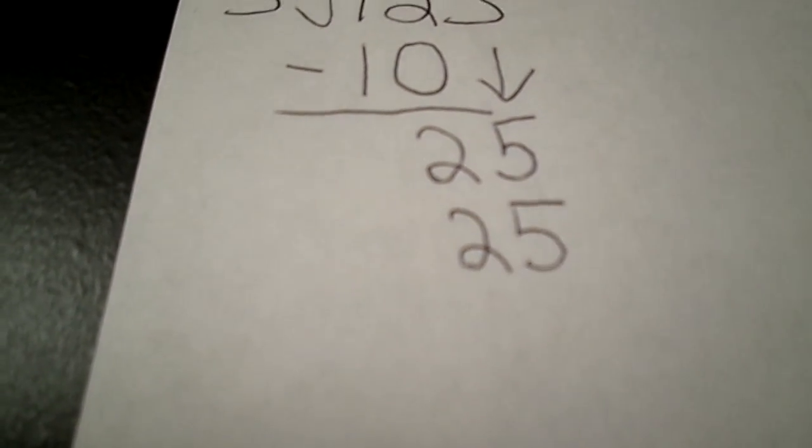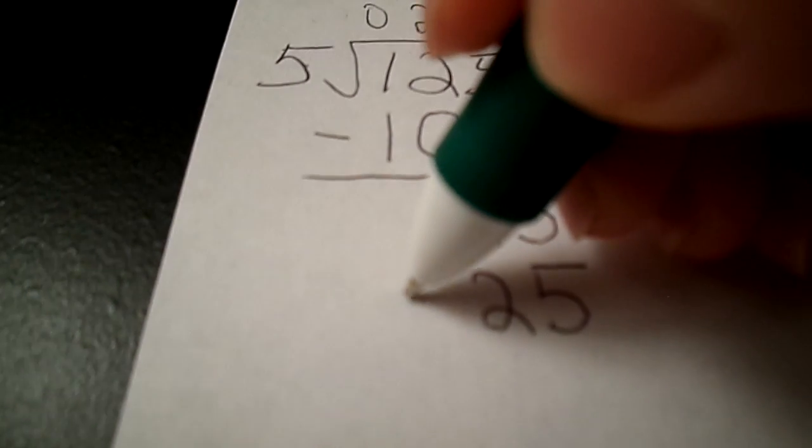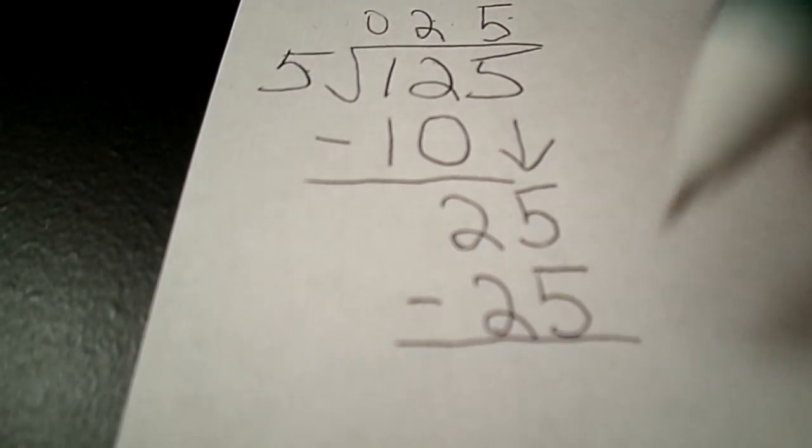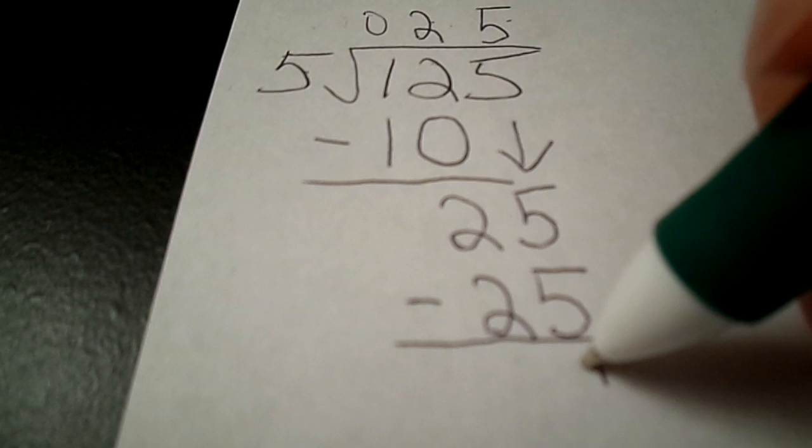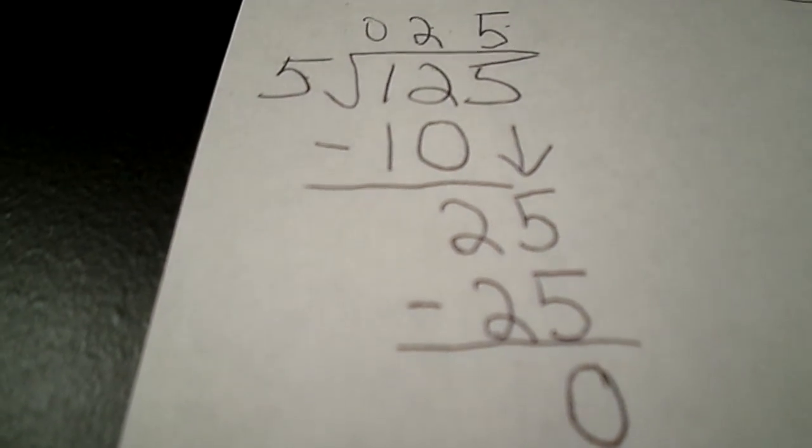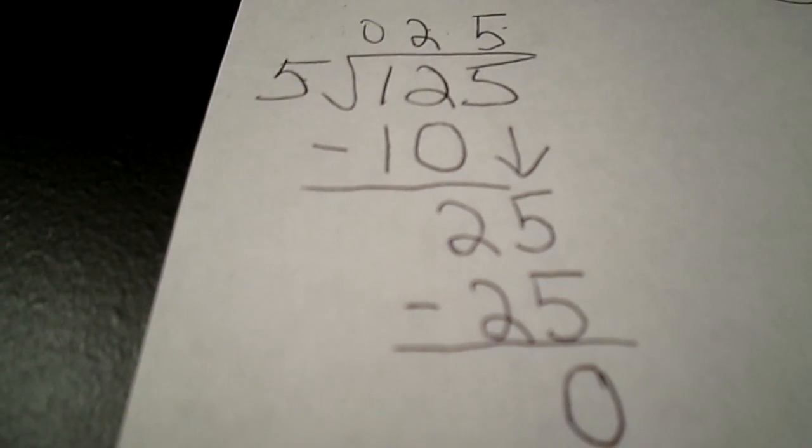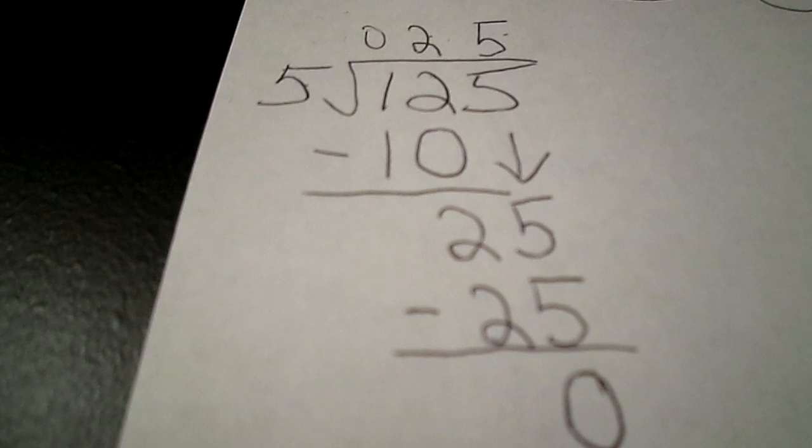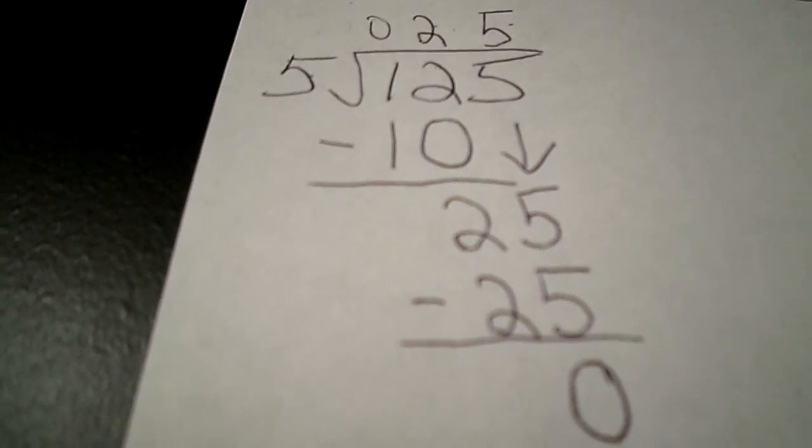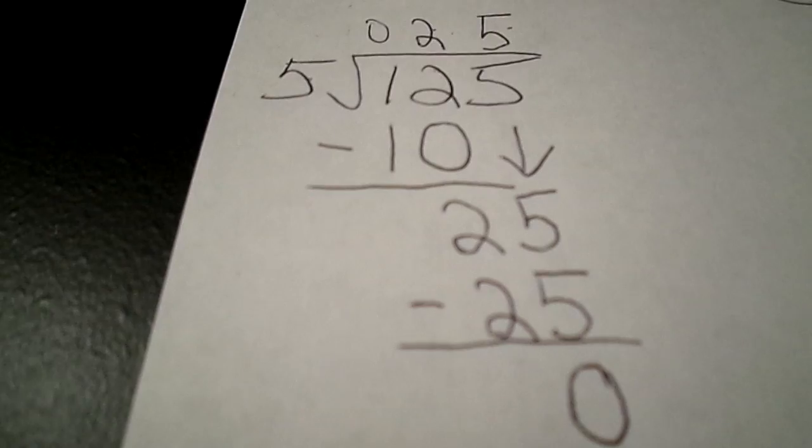Our third step remember is to subtract and that gives us zero remainder. There's nothing left to bring down. So we have completed our problem. So 125 divided by 5 is 25.